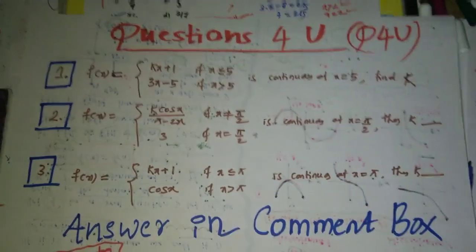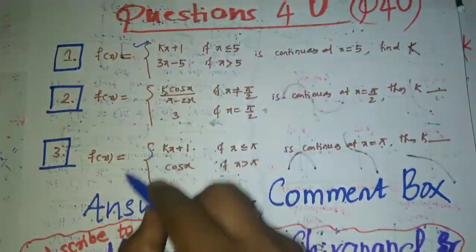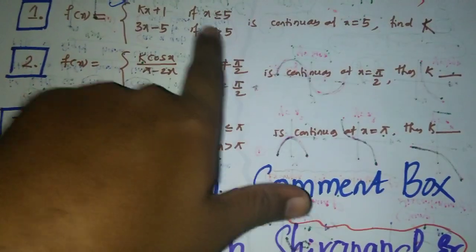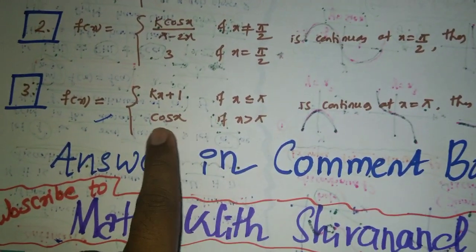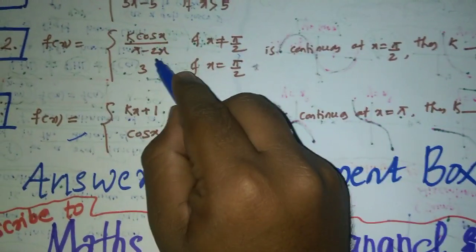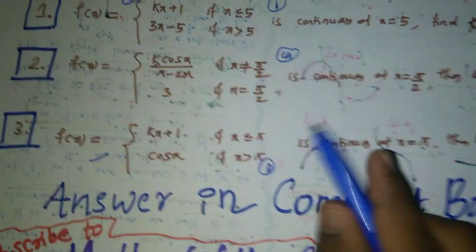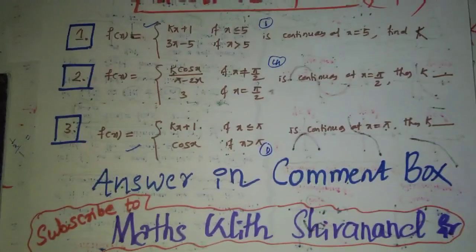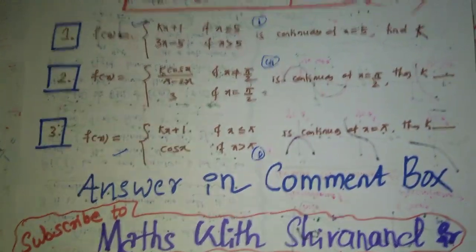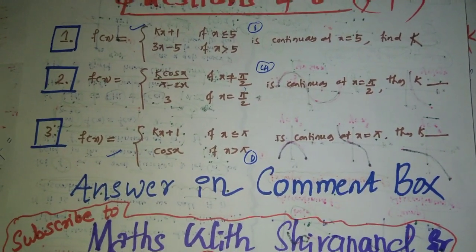Students, there are some important practice questions for you — try working them out and post your answers in the comment box. A small hint: questions 1 and 3 are direct — put x = 5 and you get the answer (remember cos π = −1). Question 2: putting x = π/2 gives 0/0, so apply L'Hôpital's rule. Methods include direct substitution, factorization, and L'Hôpital's rule. Hope these questions are understood. Let us solve more in the next video. Thank you — if you liked the video, share it with your friends. Bye, take care.